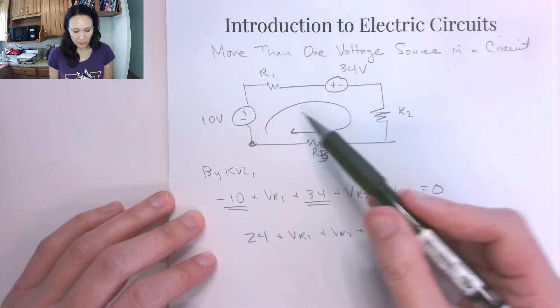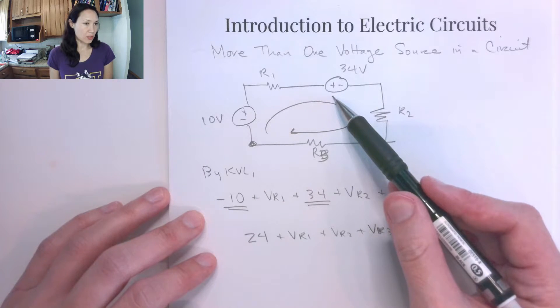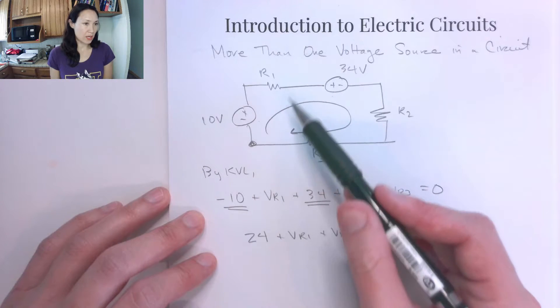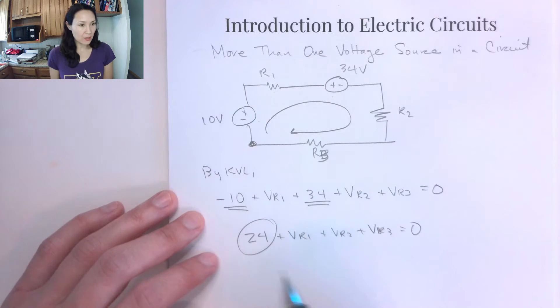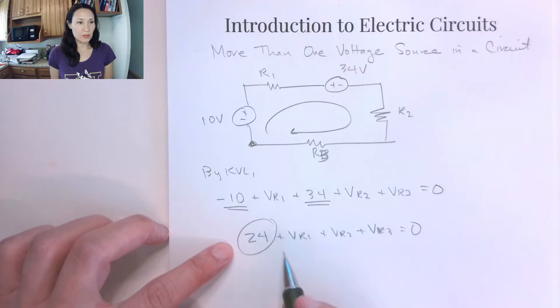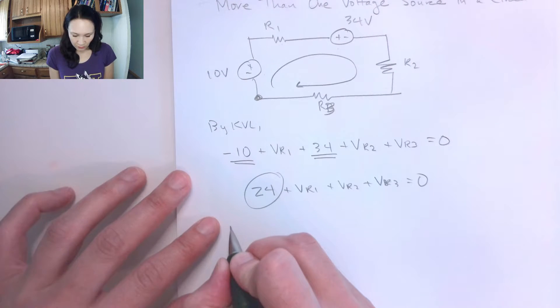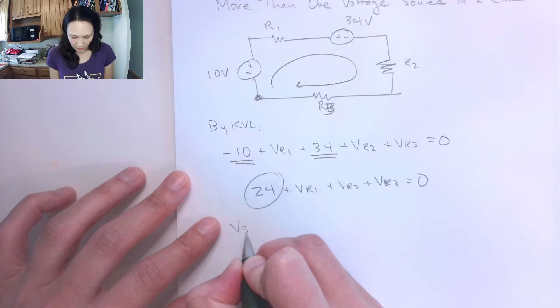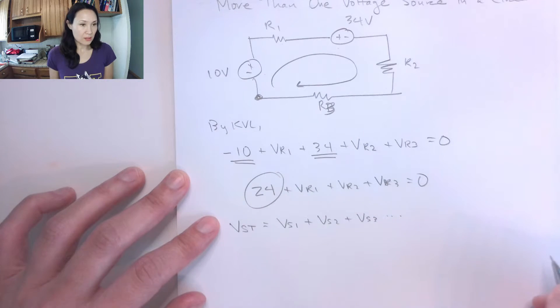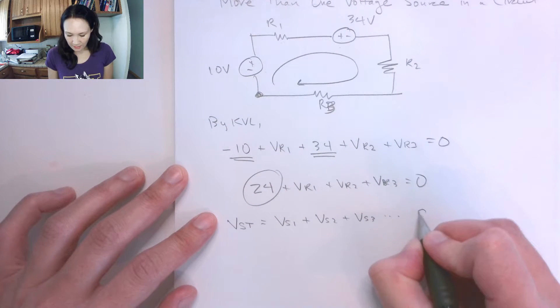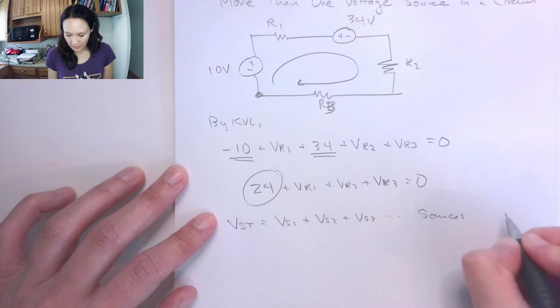So even though they're not directly next to each other, they're separated by this resistor here, we can actually just add up these sources, and they behave like a single 24-volt source. So it turns out that I can call this V source total is equal to V source 1 plus V source 2 plus V source 3, and so on, as long as the voltage sources are in series.